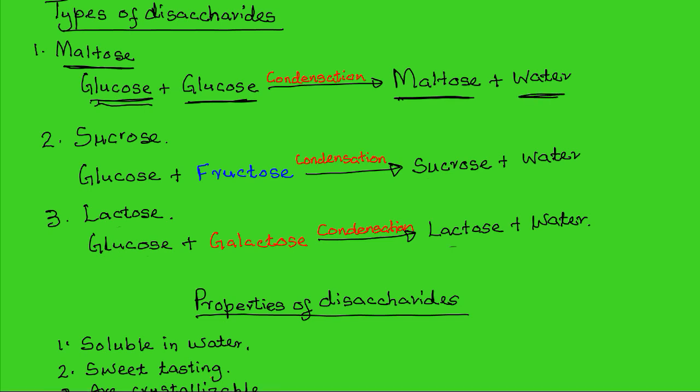Maltose is an intermediate product found either in the breakdown of starch during digestion of food along the alimentary canal, or during the breakdown of starch in a germinating seed. It also forms an intermediate product during the synthesis of starch from monosaccharides during seed development. So maltose is more of an intermediate product rather than a final product in living cells.